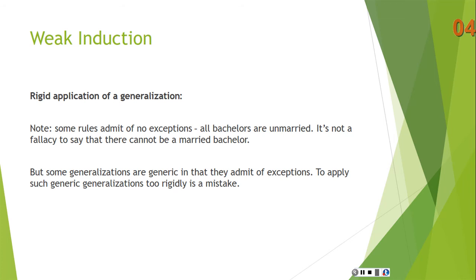To apply such generic generalizations too rigidly — that's where the mistake comes in. 'Ducks lay eggs,' 'children are shorter than adults' — those sorts of things are generic generalizations. To say you've proven the generalization wrong by finding an exception is just to misunderstand the nature of generic generalizations.